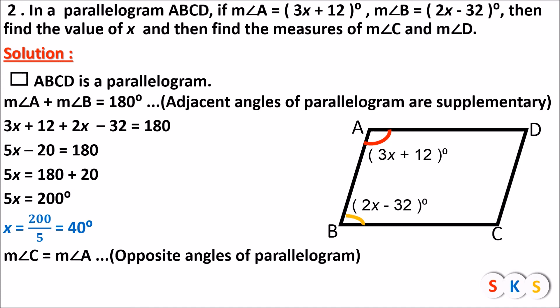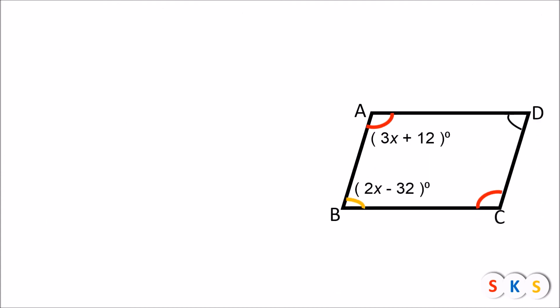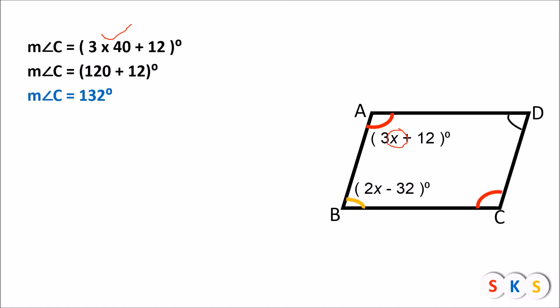Measure of angle C equals measure of angle A. You can see in the figure angle C and angle A are opposite angles, and opposite angles of parallelograms are congruent. So angle C equals angle A. Angle A is given as 3x plus 12 degrees, so angle C is also 3x plus 12 degrees. Substituting x equals 40: angle C equals 3 times 40 plus 12, which is 120 plus 12. Therefore, angle C equals 132 degrees.